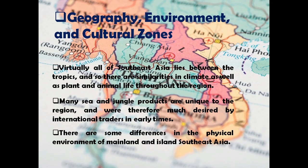Temperatures are generally warm, although it is cooler in highland areas. For example, certain small islands in eastern Indonesia were once the world's only source of cloves, nutmeg, and maize. The entire region is affected by the monsoon winds, which blow regularly from the northwest and then reverse to blow from the southeast.